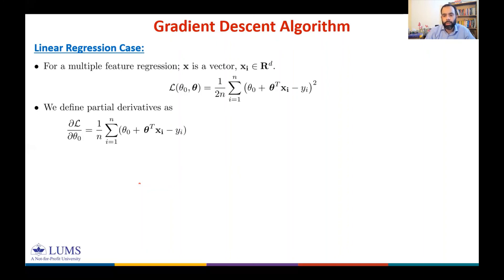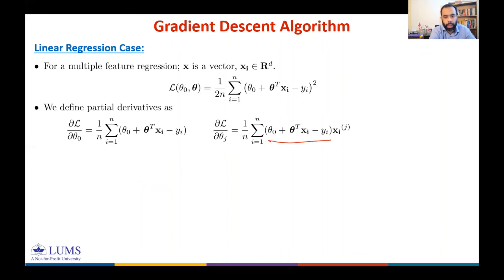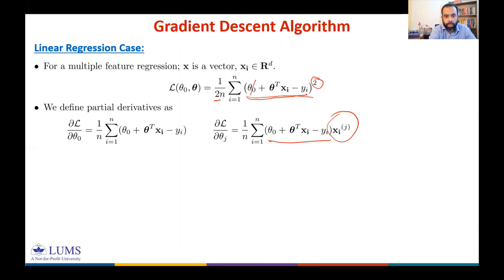The partial derivative of the loss function with respect to θⱼ is (1/n) Σᵢ (θ₀ + θᵀxᵢ − yᵢ). The factor of two cancels. Taking the derivative of the inner term with respect to θⱼ: θ₀ and yᵢ are independent of θⱼ, and from θᵀxᵢ = θ₁xᵢ₁ + θ₂xᵢ₂ + … only the j-th term survives.